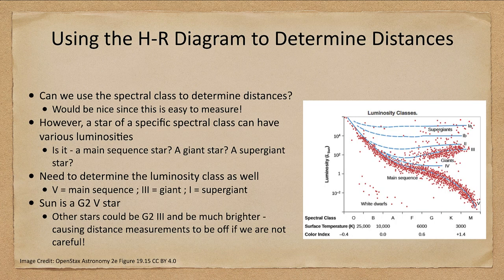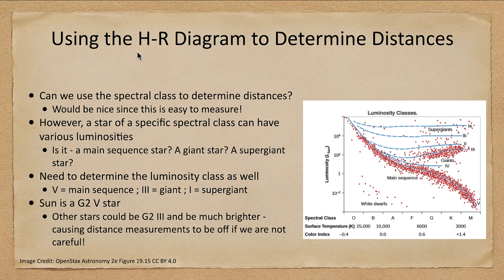So we'll look at various methods to be able to determine the distances to stars in the universe. Let's start off looking at what we mean by spectroscopic parallax, which is using the HR diagram to determine distances.